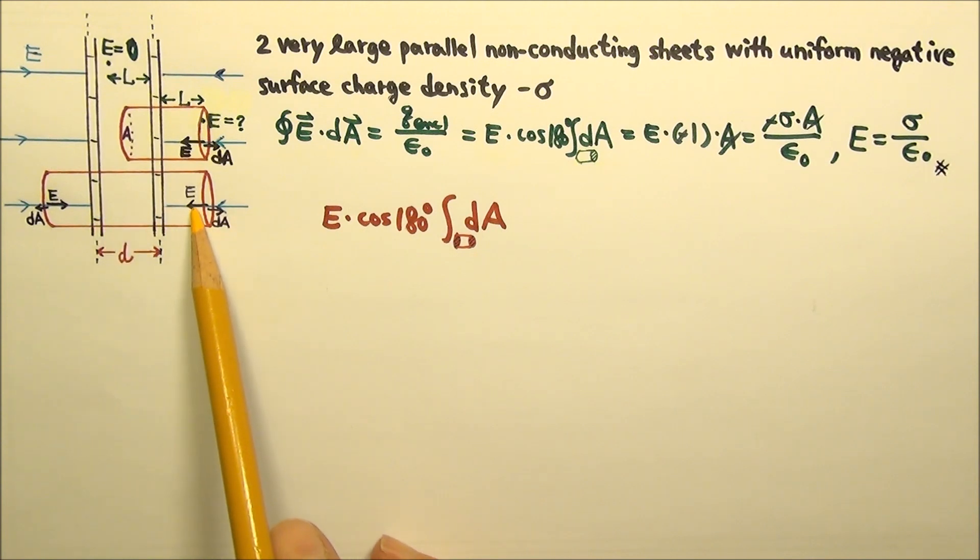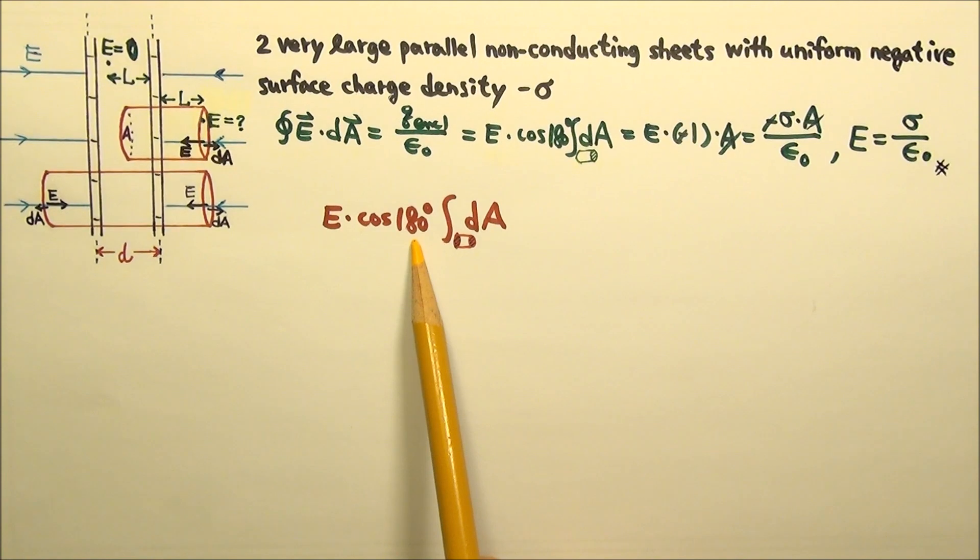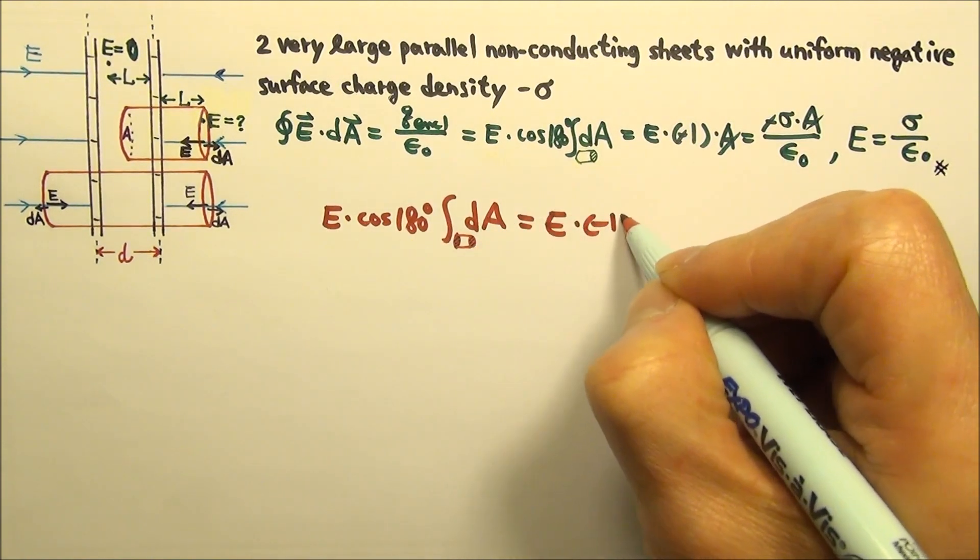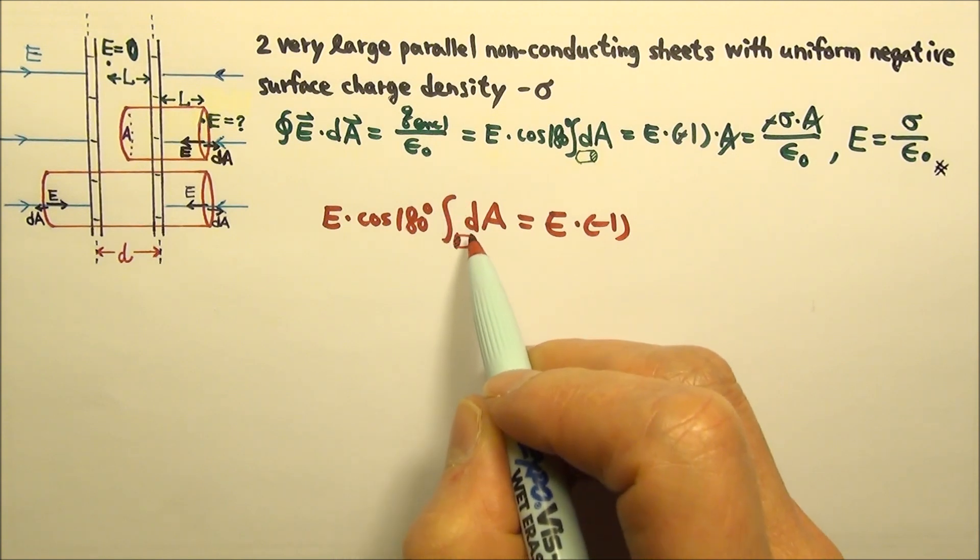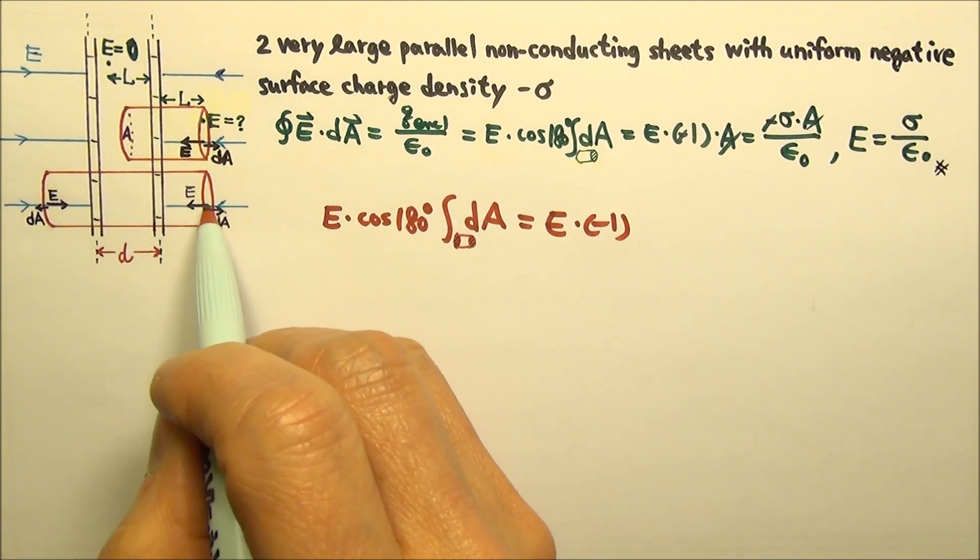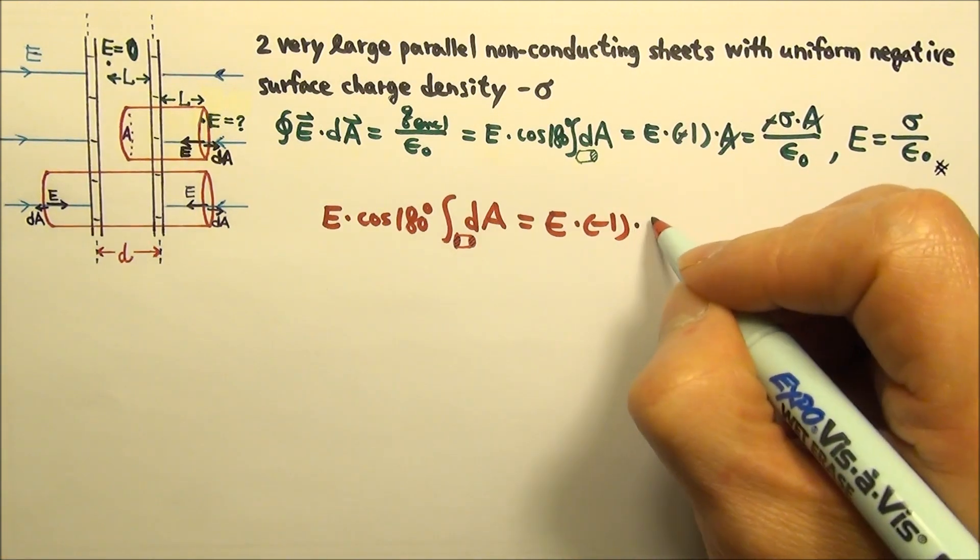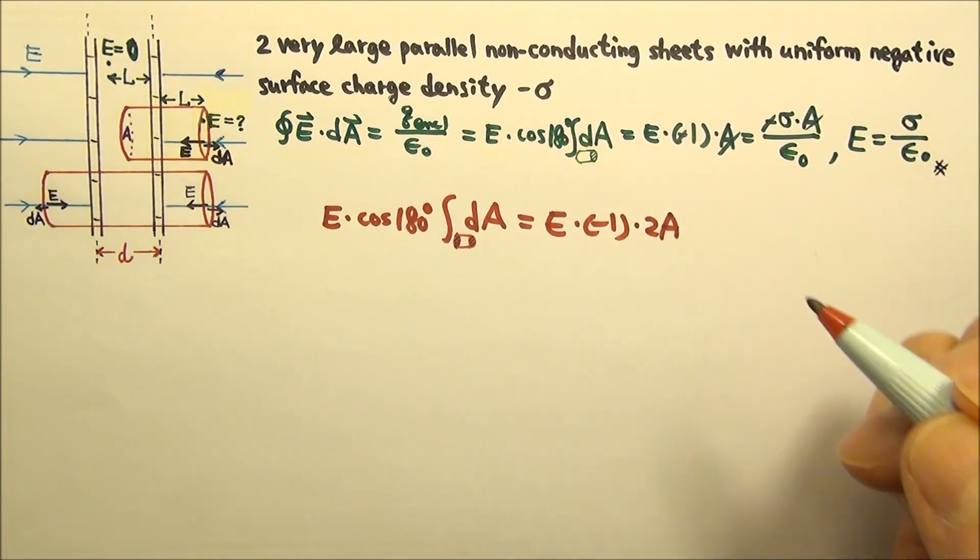the angle between E and dA would be a constant 180 degrees. So this is E times negative 1 times the integral of dA for both ends. That will give us A plus A. The area of the integral would be 2A.